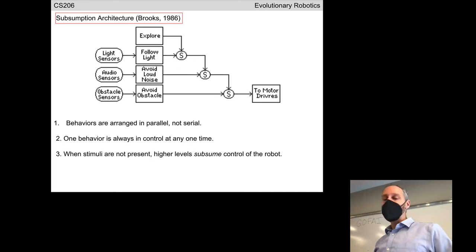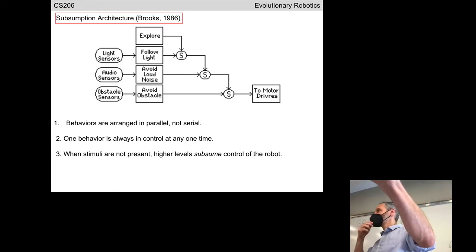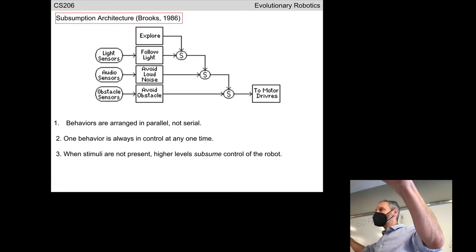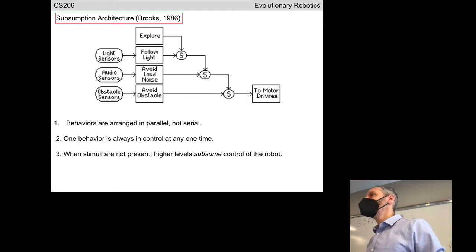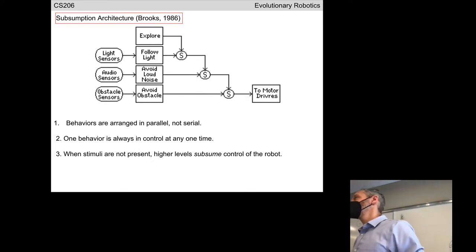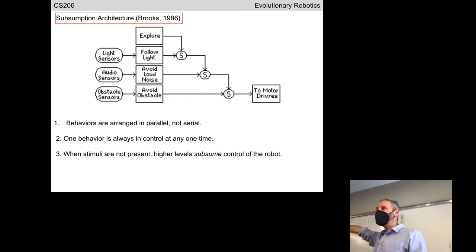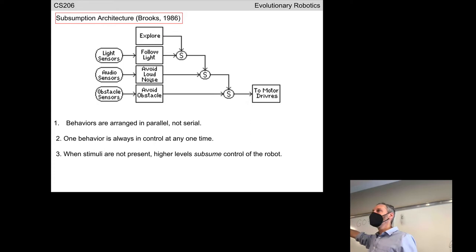In the subsumption architecture, avoid obstacle is the primary behavior. Most of the time, that behavior grabs onto the sensors and motors. The avoid obstacle module needs information from the obstacle sensors — laser range finders or bump sensors, depending on the robot. It takes that data and drives the motor: bumped on the left, turn to the right; bumped on the right, turn to the left. This is essentially a Breitenberg vehicle — each behavioral module is its own Breitenberg vehicle. If none of the bump sensors are firing, one of the slightly less important behaviors can subsume or take over control of the sensors and motors.